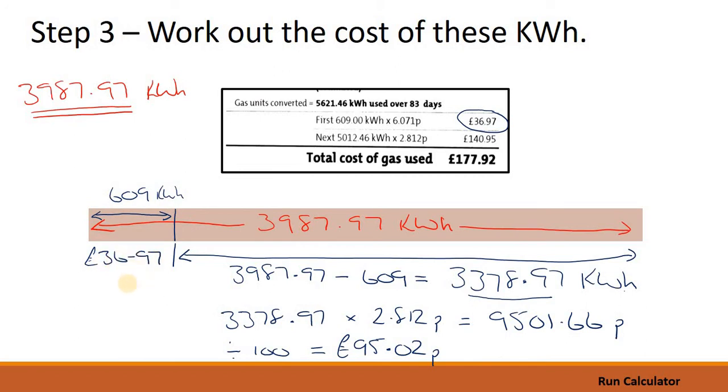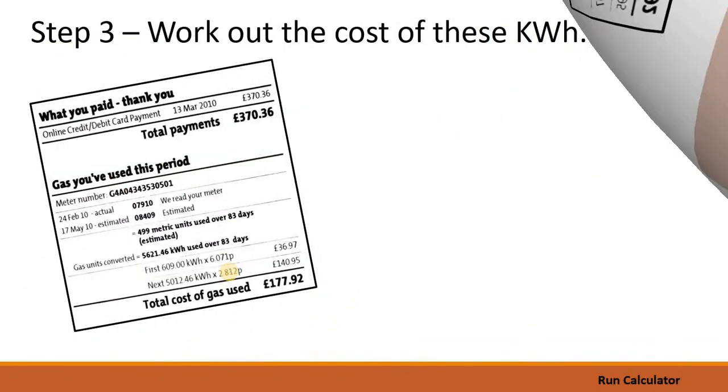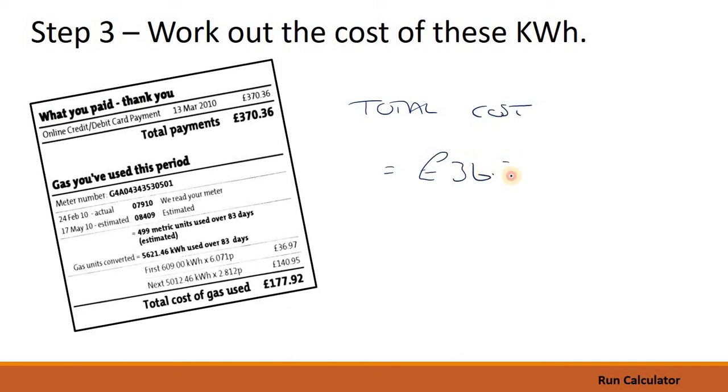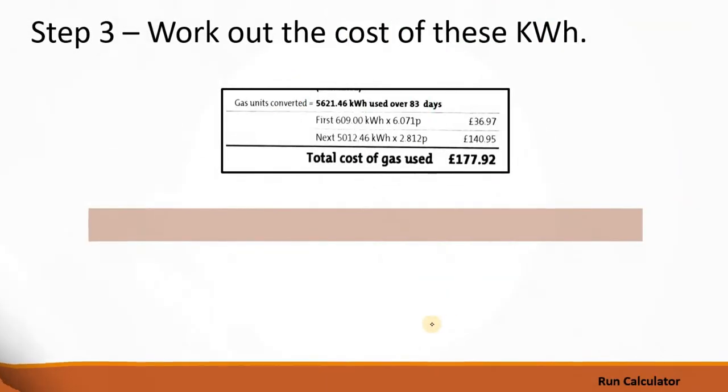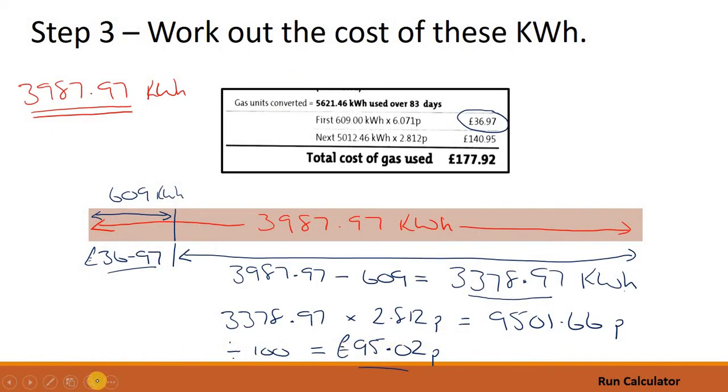And that's in addition to our first 609 kWh that cost 36.97. So let's work out the total bill. It's easy. We just add that number to that number. So the total cost is 36 pounds and 97 pence plus the thing we've just worked out which was 95 pounds and 2 pence.